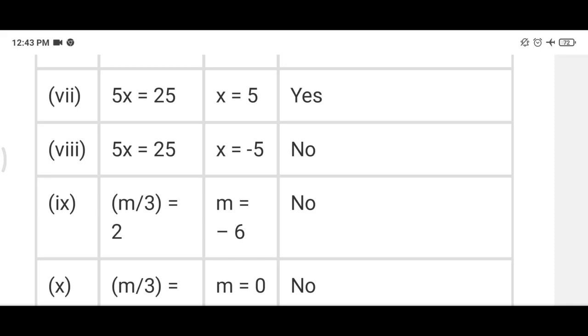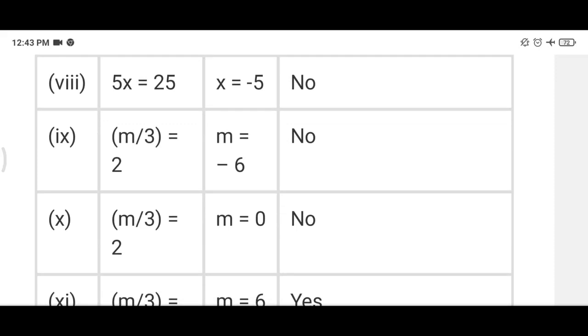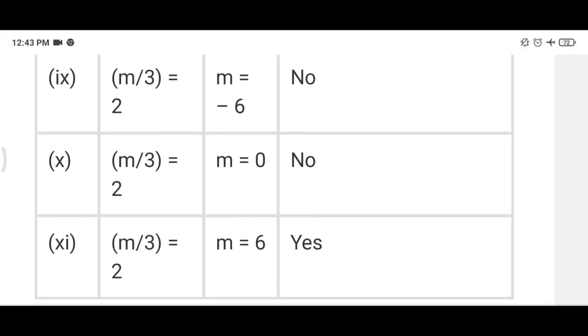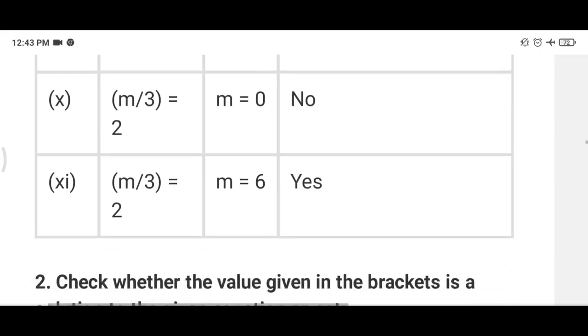Ninth part, here we will put x equals to minus 5. If we put minus 5, then 5 into minus 5 is minus 25, which is not 25, so no. m upon 3, m value minus 6, so minus 2, which is no. m equals 0, 0 upon 3 is equal to 0, so that's why it is not 2. If we put 6, then it will be yes. So here you have to put the value and then write yes or no in the table.